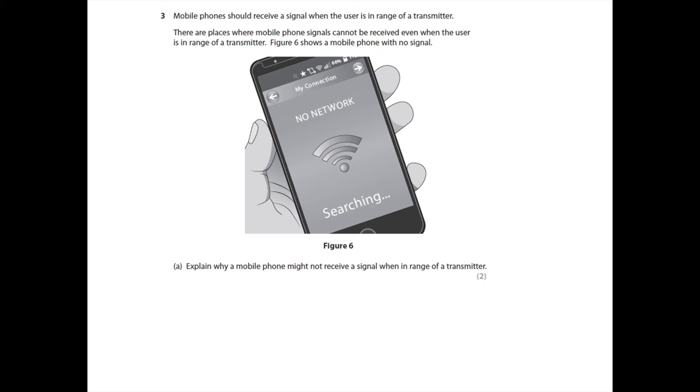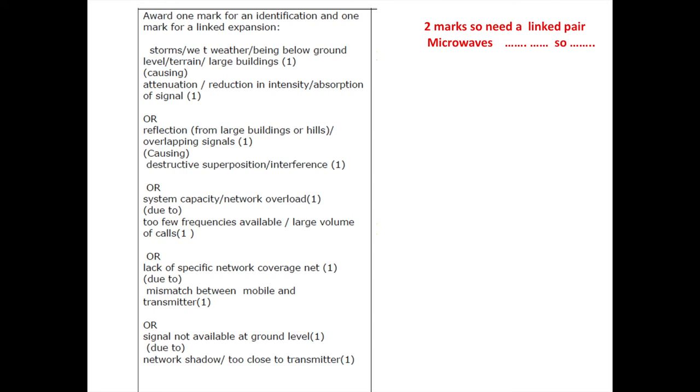Read through this question and then pause the video. Remembering it's worth two marks so you need a linked pair. So you can have any of these linked pairs. My advice is to use one of the following. First of all, we know microwaves are absorbed by storm or wet weather. So you could say storms or wet weather absorb the signal. Or you could say that large terrains like hills or large buildings block out the signal or absorb the signal. The other one I'd recommend is that, of course, if their system is overloaded or the network is full in your cell, then that means that you won't be able to connect because there aren't any frequencies available.